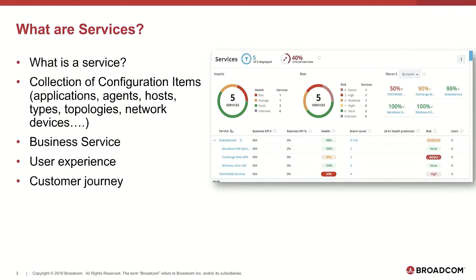As a brief example: let's say I have DX Application Performance Management and I have 10,000 agents running, and I have two web applications. A service can comprise both applications on a global scale, and I can call the service overall an 'application availability service.' Or I have the option to create separate services for each of these applications. When I create a service, I have the option of picking and choosing the agents that populate that particular application. So if each application is serviced by 5,000 agents each, I can create two separate services — one for application A getting data from 5,000 agents, and another for application B getting data from the other 5,000 agents.